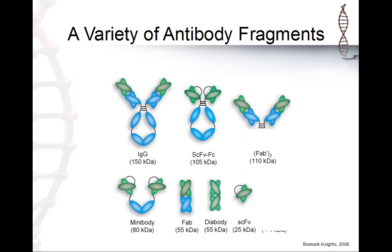For neurodegenerative diseases we have a problem with the blood-brain barrier — it's an issue of the size of the antibody. Of course, the clearance of small antibody fragments is much faster, but there are modifications we can make to keep them in the blood and in the system without having fast clearance.